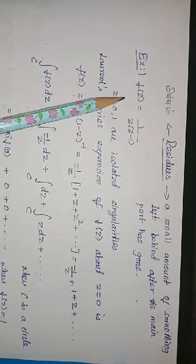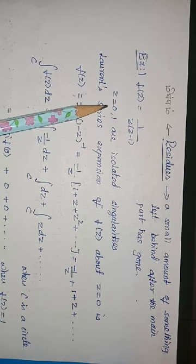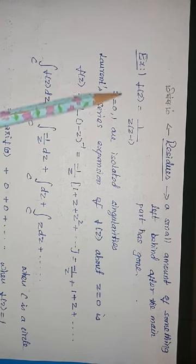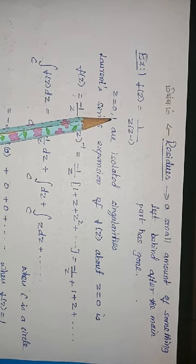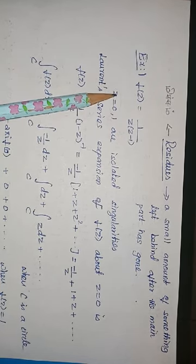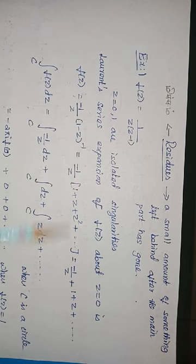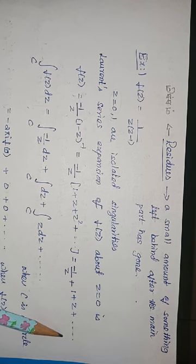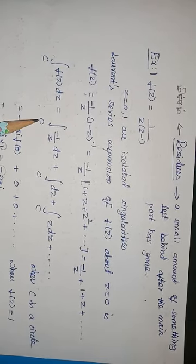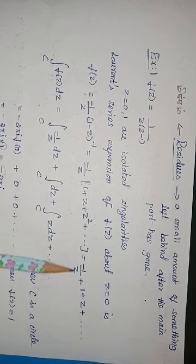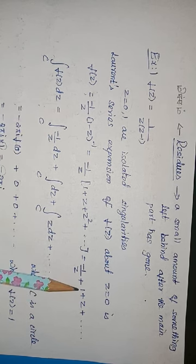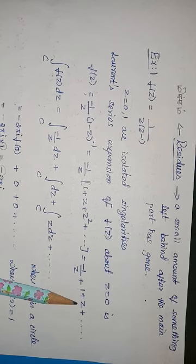Consider the function f(z) = 1/(z(z-1)). It has two singular points: 0 and 1. Let me expand f(z) about z=0 first, then about z=1, and then integrate to see what happens. The expansion of f(z) about z=0 is: −1/z + 1 + z + … Now integrating both sides over a closed curve C, each term gives an integral: integral of −1/z dz, plus integral of 1 dz, plus integral of z dz, plus etc.